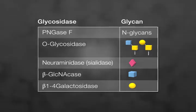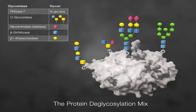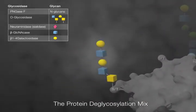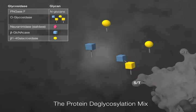The exoglycosidases sialidase, beta-GlcNAcase, and beta-1,4-galactosidase can be used to trim down O-glycans to their core structures. The protein deglycosylation mix can remove short O-glycans and longer-chain O-glycans in a step-by-step reaction.